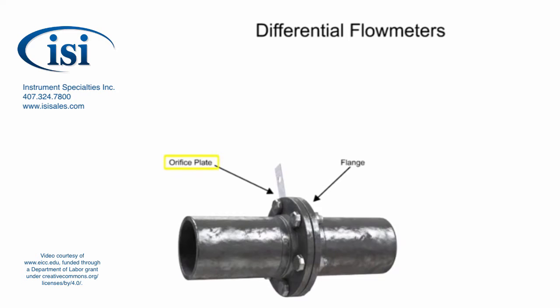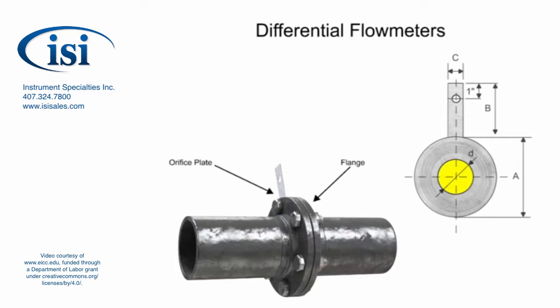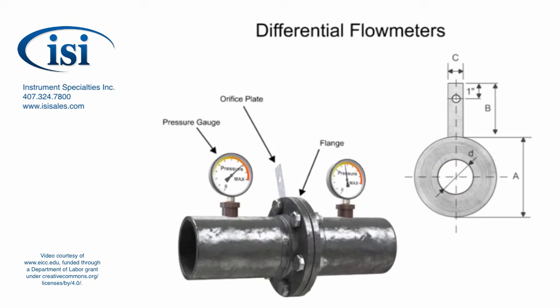The orifice plate of the flow meter is comprised of a circular metal disc with a specific hole diameter that reduces the fluid flow in the pipe. Pressure taps are added on each side of the orifice plate to measure the pressure differential.